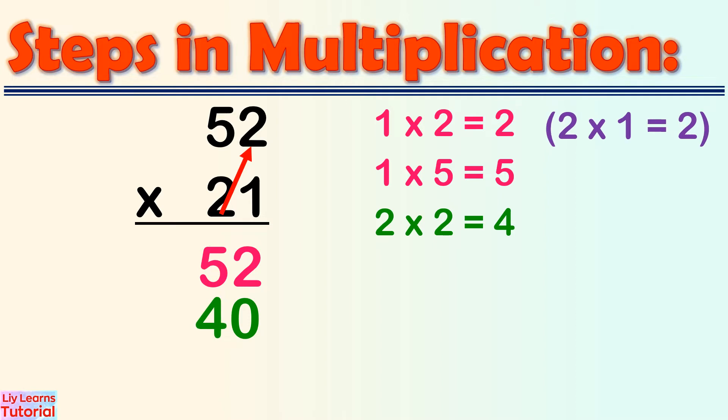Step 4: Multiply the 10s digit of the multiplier by the 10s digit of the multiplicand. That is, 2 times 5 equals 10.